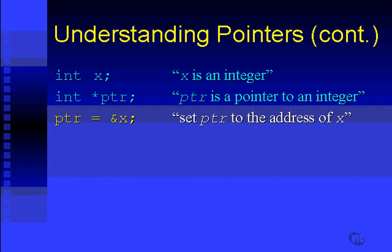ptr equals ampersand x. Okay, what does that mean? Well, remember that ampersand x was the address of x. You could interpret that as the address of x. In the previous diagram, that ampersand x was 103, the address of the box where x lives.